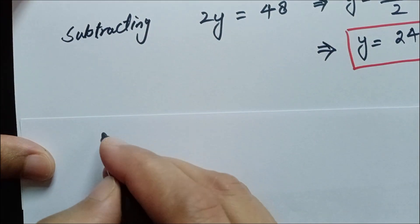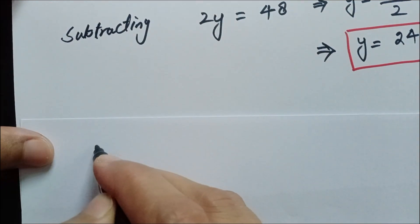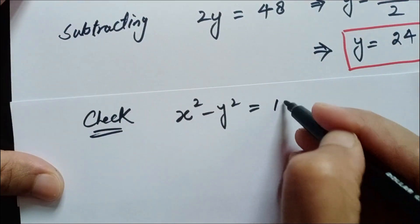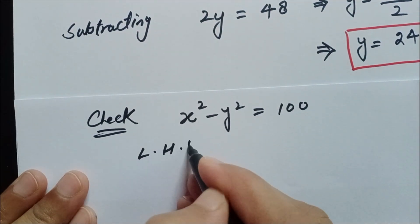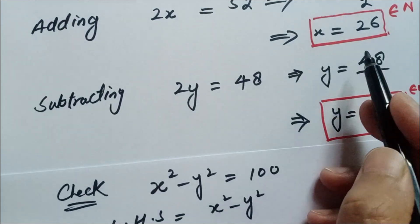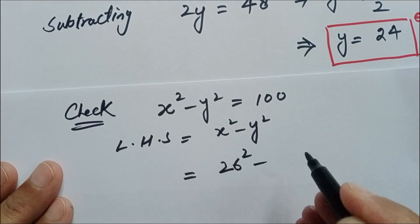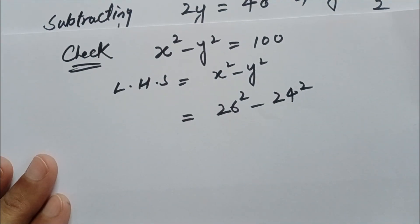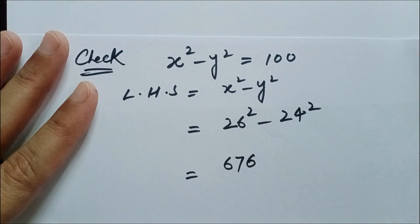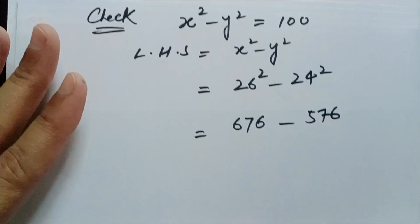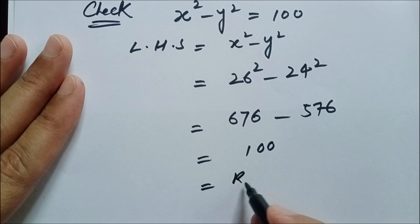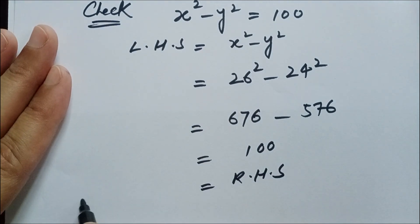Now we need to check these values. The left-hand side is x squared minus y squared. With x equals 26 and y equals 24: 26 squared minus 24 squared equals 676 minus 576, which equals 100, which is equal to the right-hand side. So left-hand side equals right-hand side.